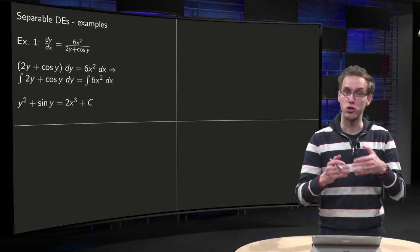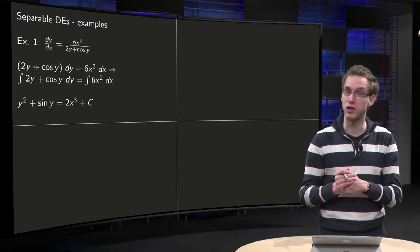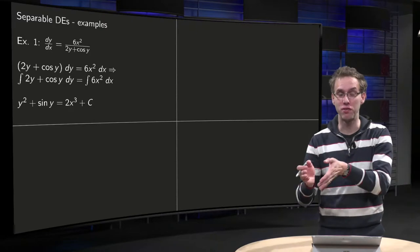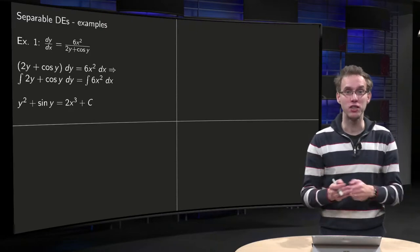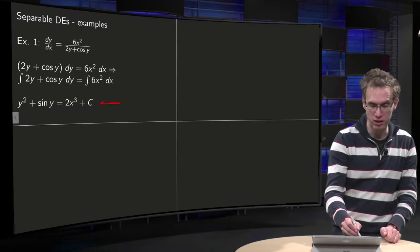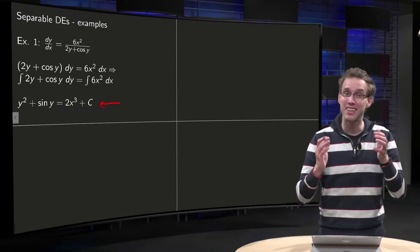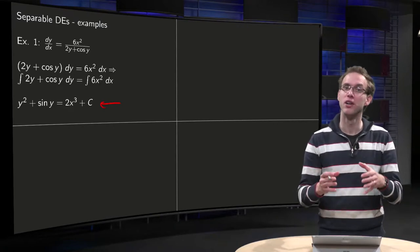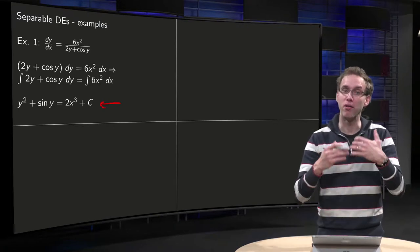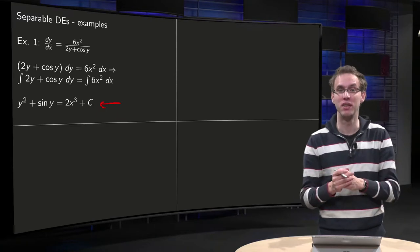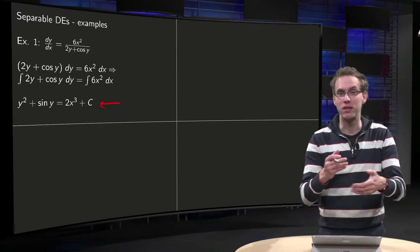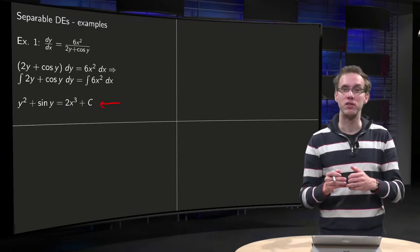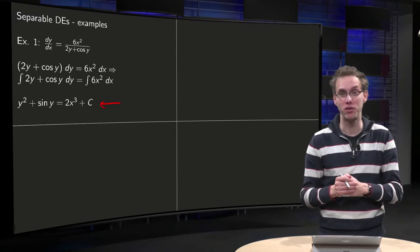So our solution equals y squared plus sine y equals 2x cubed plus c. Now, we want to have y as a function of x. However, the example stops here because this equation here is a so-called transcendental equation. You cannot solve y in terms of x. There is no explicit solution, so you have to stop here. You now have y implicitly given in terms of x. You cannot make it better than this. This can happen when you are trying to solve differential equations.